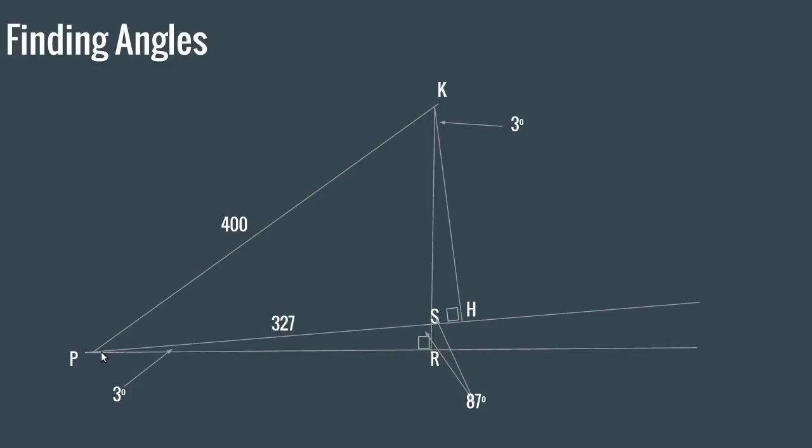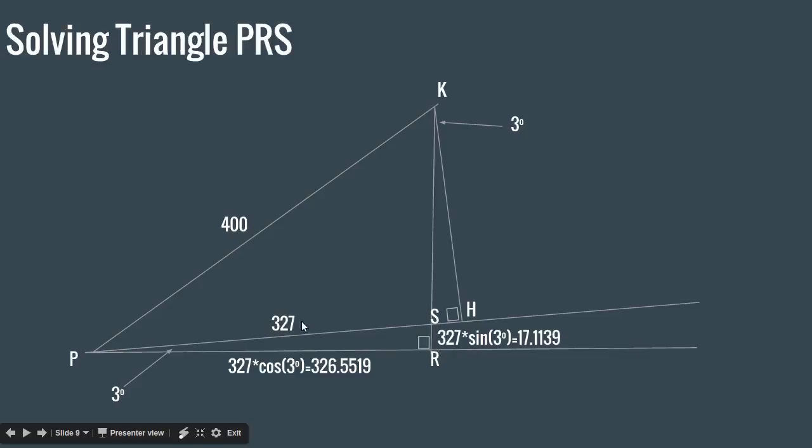And once we know that, what can we find next? If we look at this right triangle, we only have an angle, so we can't really find anything here. If we look at triangle PKR, we only have a side, so we can't figure out anything there. But if we look at triangle PSR, we have both an angle and a side, so we can solve that triangle. PS is the hypotenuse here. For PR, which is the adjacent, I use cosine and get 326.5519. And for SR, which is the opposite, I use sine and then I get 17.1139.